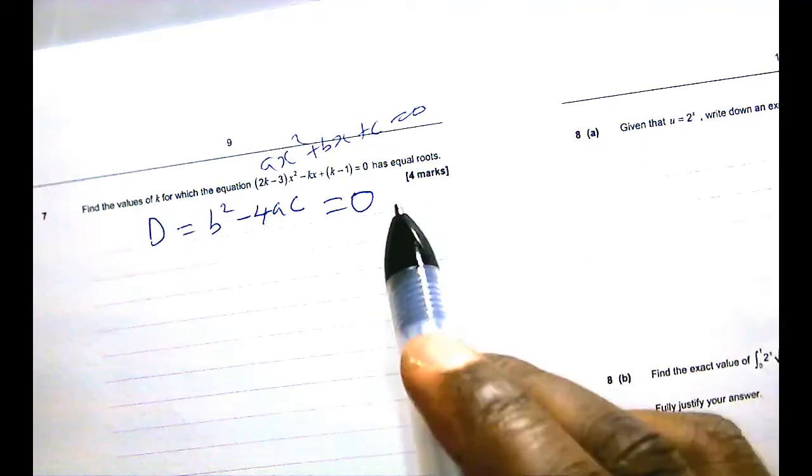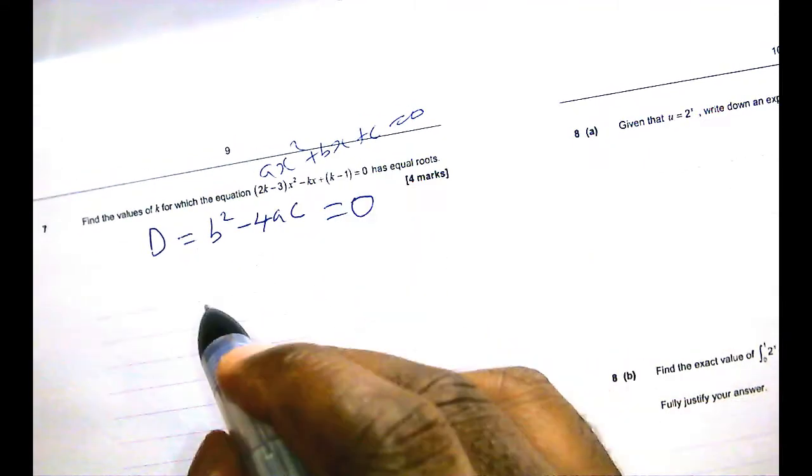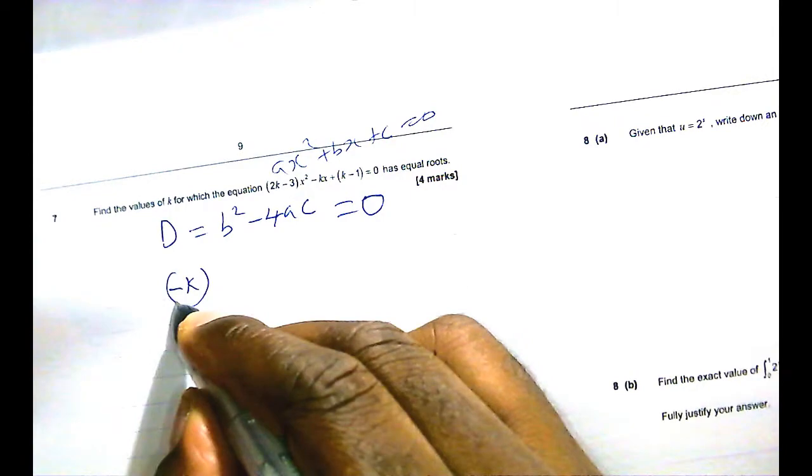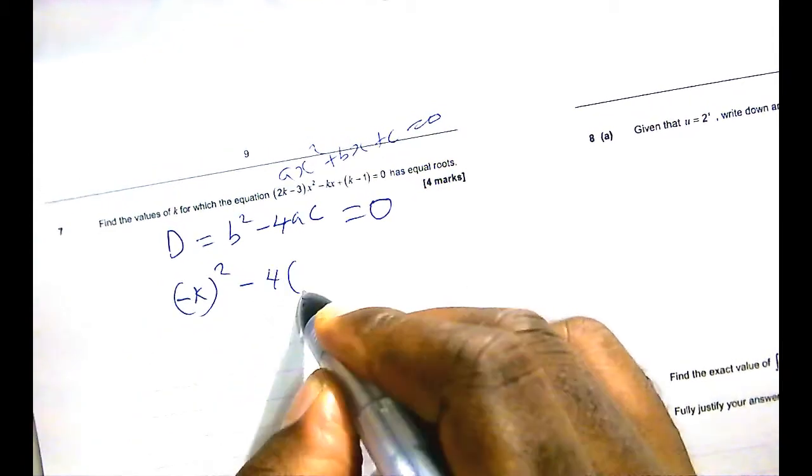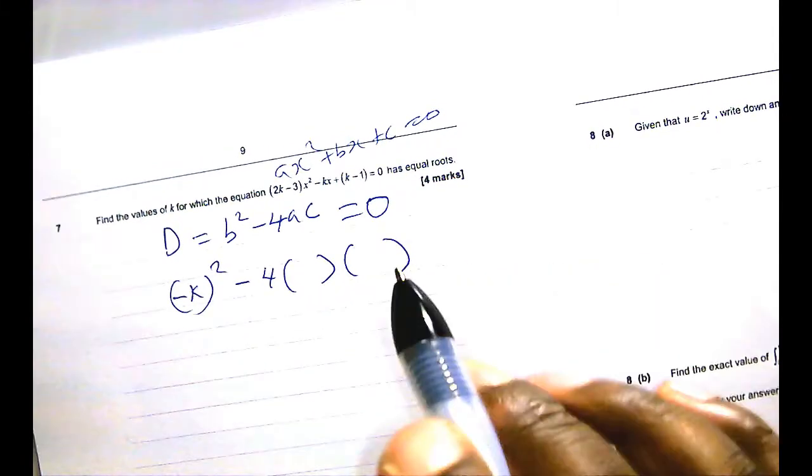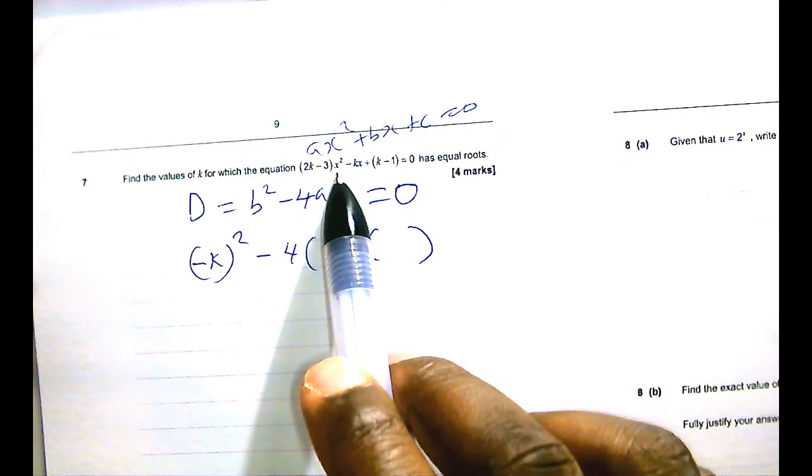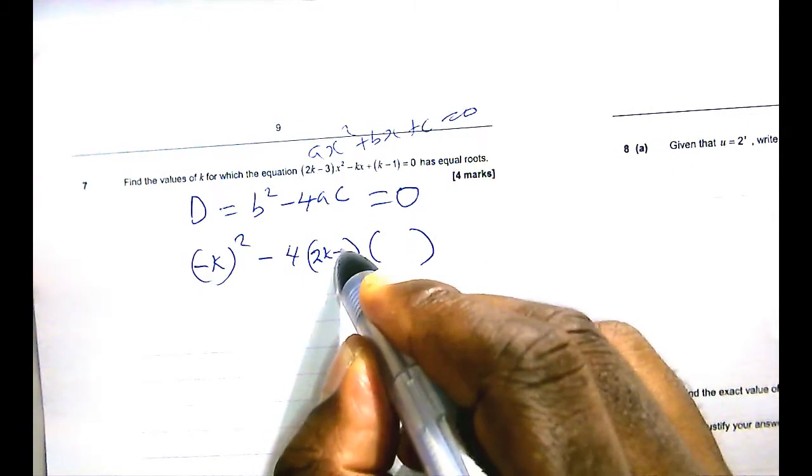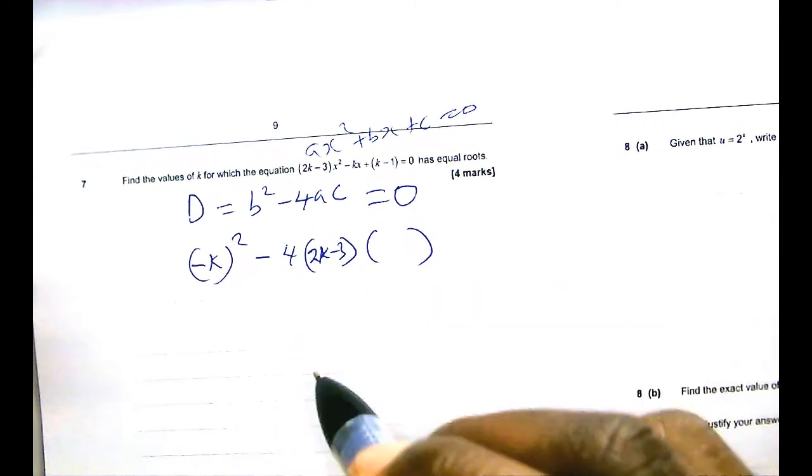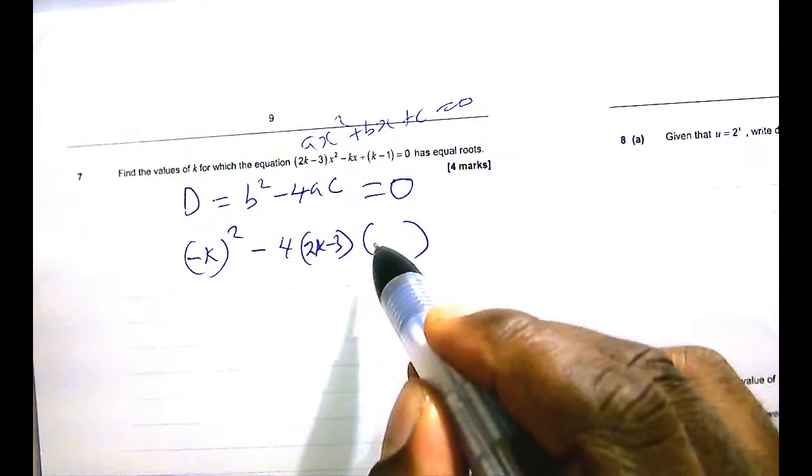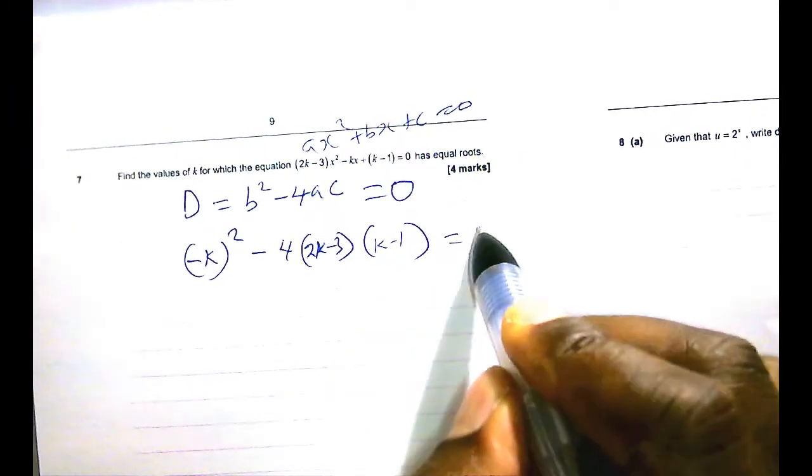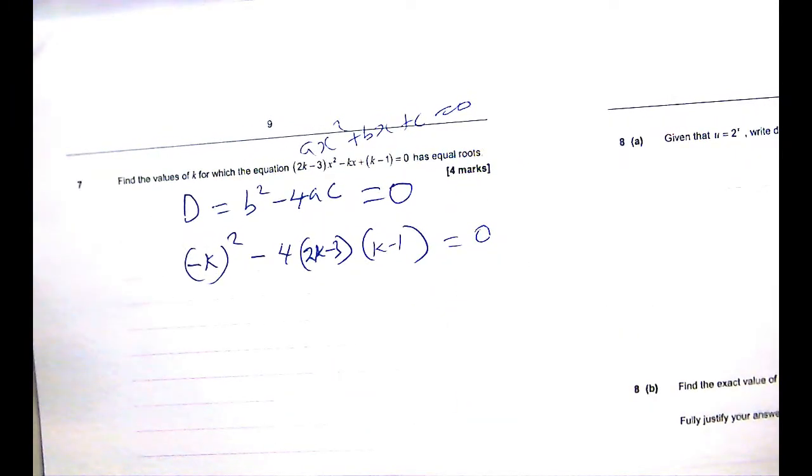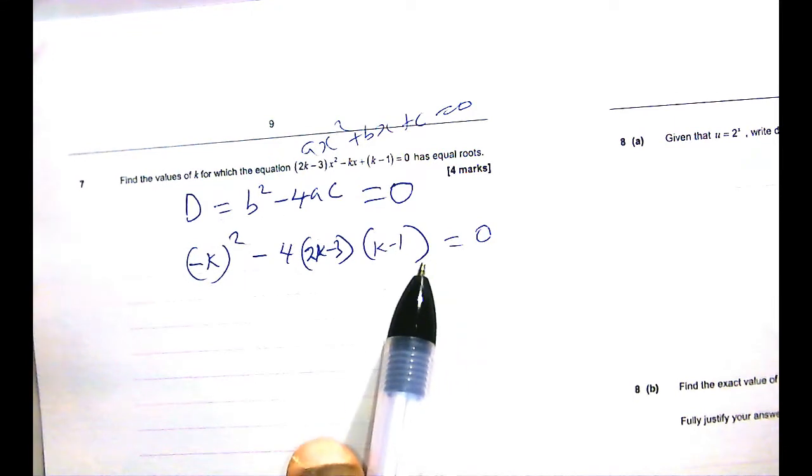So your b is the guy in front of x and that is minus k. So minus k squared minus 4ac. What is our a? a is the guy in front of x squared. In this case, 2k minus 3 is our a. So 2k minus 3. And what is our c? The constant term k minus 1. And we want all of that to be equal to 0. So if we are solving for k, we simply need to solve this quadratic. I mean, we need to solve this quadratic in k.